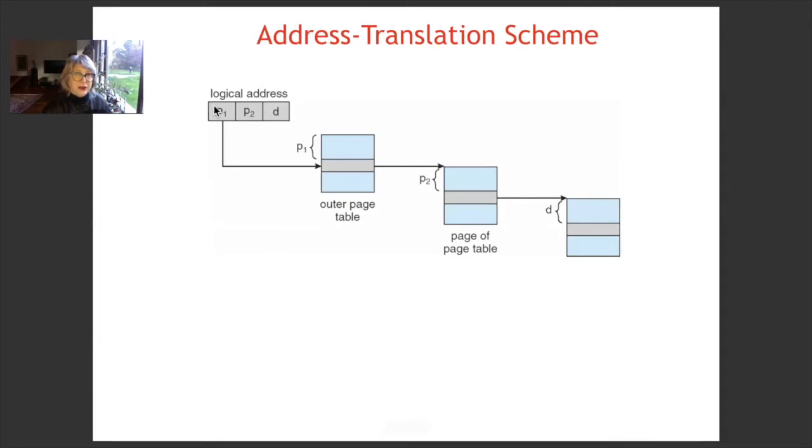Here, if it calls to the logical address, p1 is showing the distance from the beginning of the outer page table. From there, in the outer page table, we get the frame number in which the related page of the page table is located. And p2 is showing what is the distance of the related entry of the table from the beginning of the page of that page table.